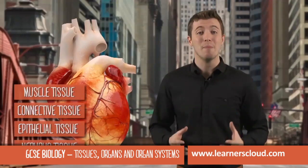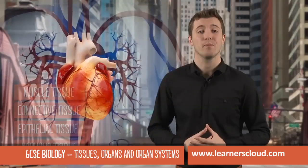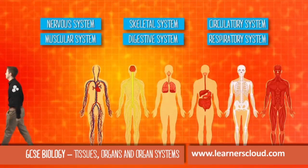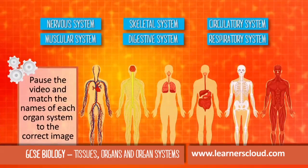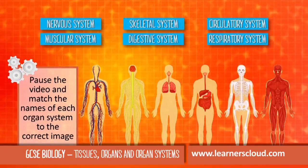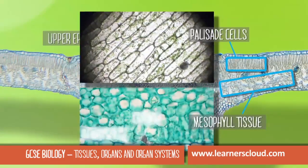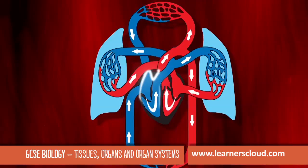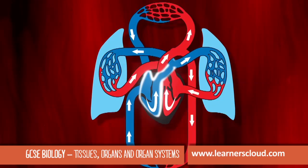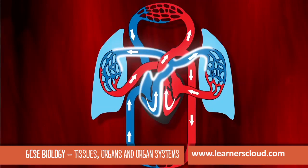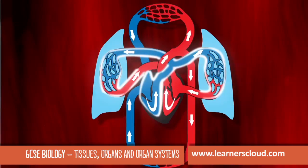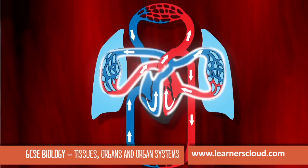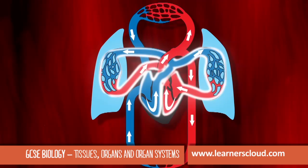The heart can combine with other organs as part of an organ system. Two more tissues found in the leaf are the xylem and phloem. One part carries deoxygenated blood to the lungs to take in oxygen and then returns to the heart.